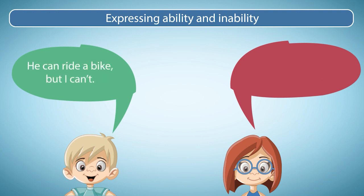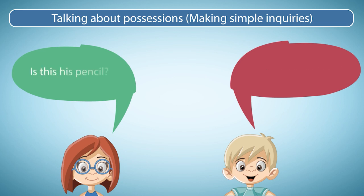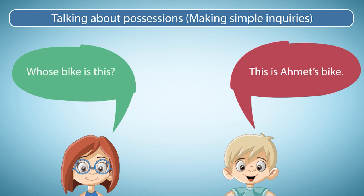He can ride the bike, but I can't. This is my guitar. These are your books. Is this his pencil? Yes, it is. Are these her books? Yes, they are. Whose bike is this? This is Ahmet's bike.